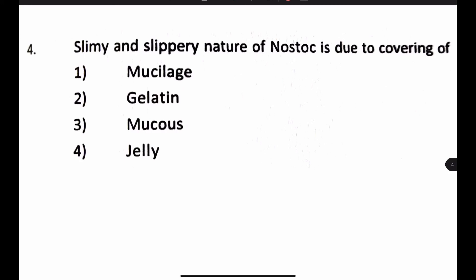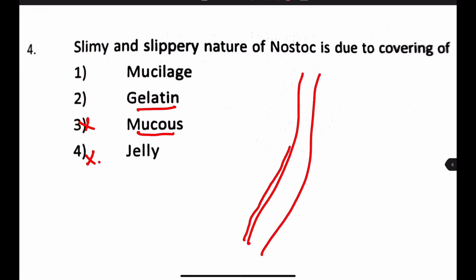The slimy and slippery nature of Nostoc is due to the covering of: mucilage, gelatin, mucus, or jelly? Jelly is not found in algae. Mucus is found in animals, not algae — it's confused with the word mucilage. Gelatin can't be the covering of algae because algae is actually a source of gelatin. The covering which Nostoc has is actually mucilage, and it results in the slimy and slippery nature. So the answer is number 1.